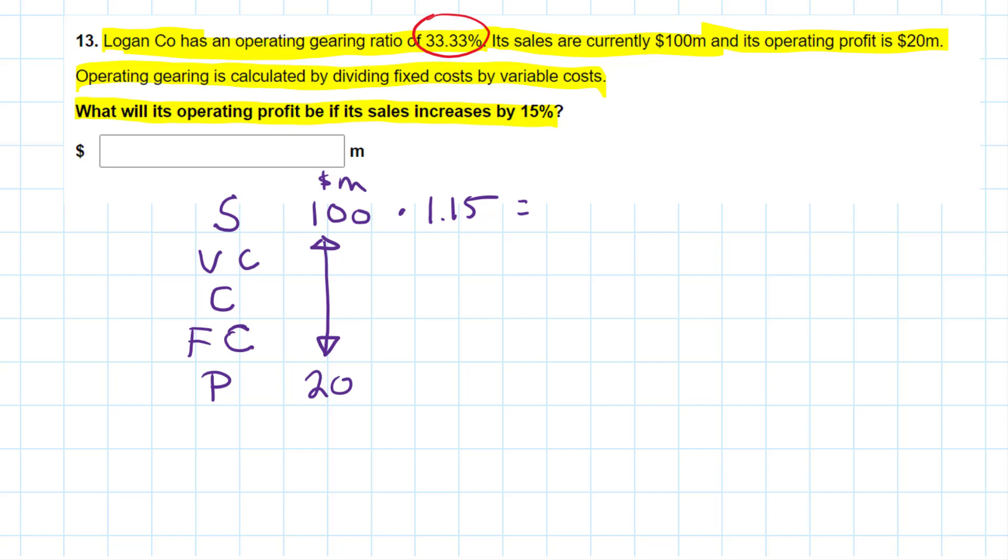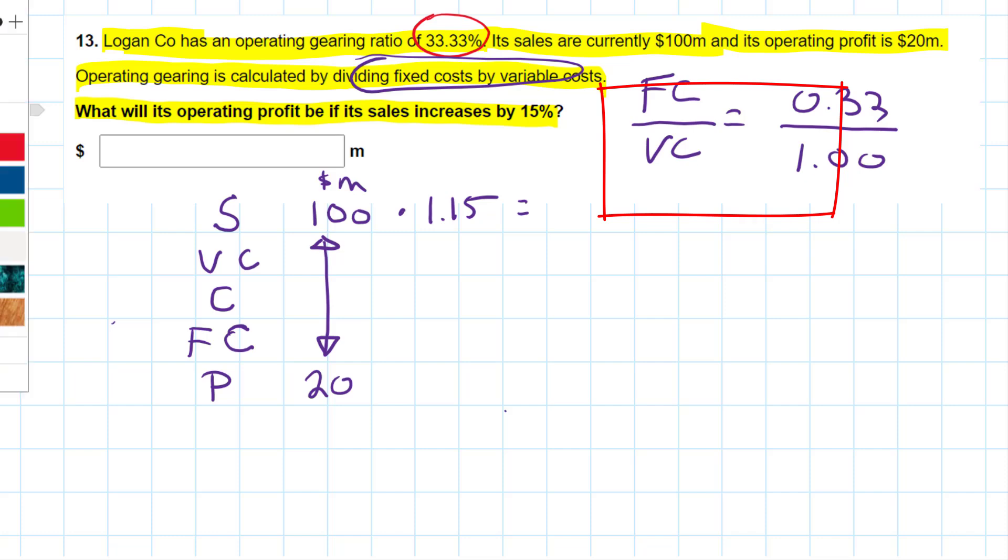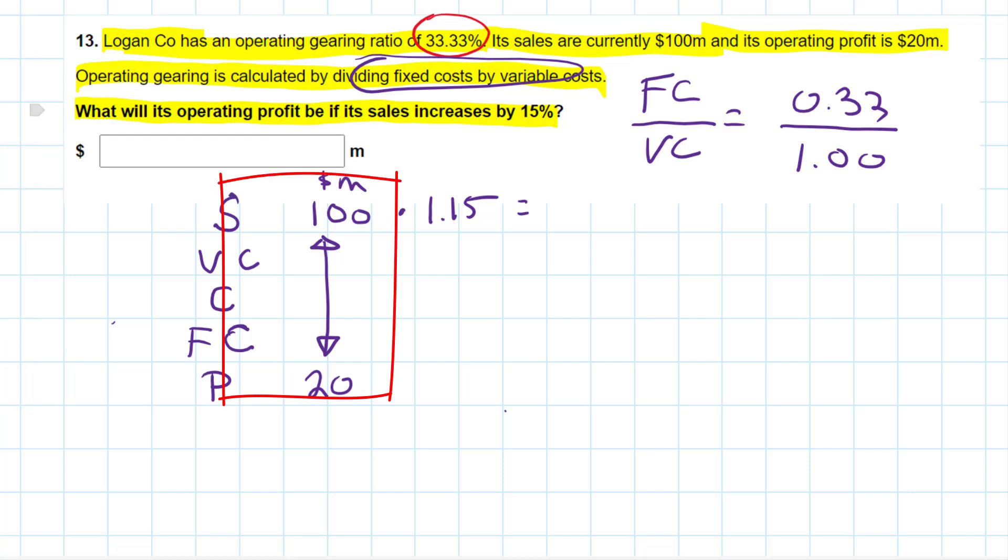We learned earlier that the operational gearing formula here was dividing fixed costs by variable costs. So fixed costs over variable costs is equal to 0.33. Another way of saying that is that the fixed costs over the variable costs are equal to 0.33 over 1. Let's move this up here for a moment and come back to our P&L. We have the total costs here in percentage terms up here on the right, but we also know the total cost in monetary terms would be the difference between the sales and the profit. So the total costs would be 80 dollars. 100 minus 80 is 20, otherwise known as a balancing figure.